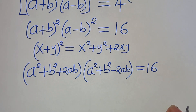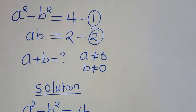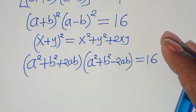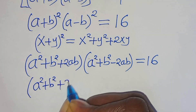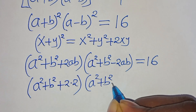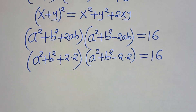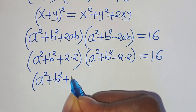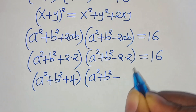From equation 2, ab equals 2. Substituting this in, we have a squared plus b squared plus 2 times 2, multiplied by a squared plus b squared minus 2 times 2, equals 16. So this becomes a squared plus b squared plus 4, multiplied by a squared plus b squared minus 4, equals 16.